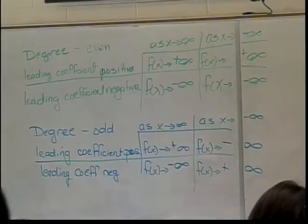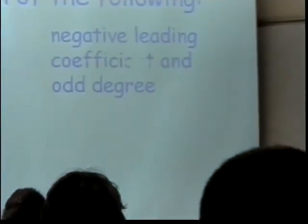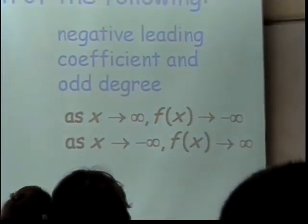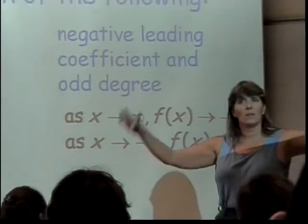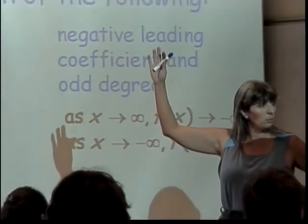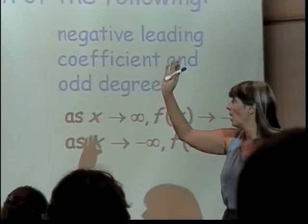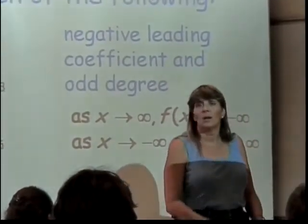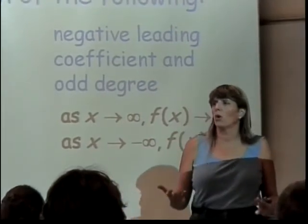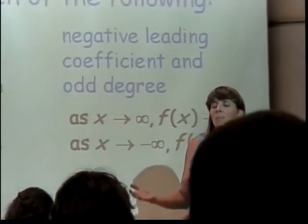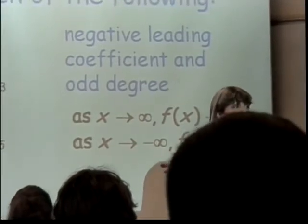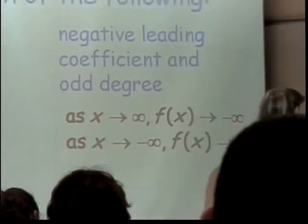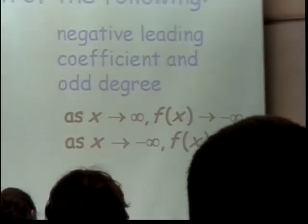This is what you need to know related to end behaviors. Notice my even degree functions went both ends to the same place. My odd degree functions, the ends go different places depending on whether you have a positive or a negative leading coefficient. Now that's important, just so we know how things look in the end. But what's really important in most of what we do is what's happening in the middle where you can't see it because I'm in the way.